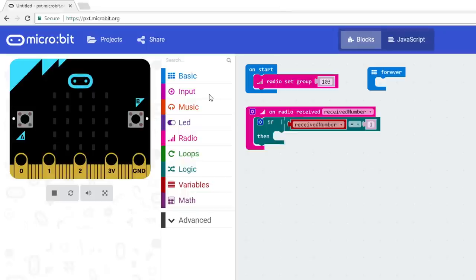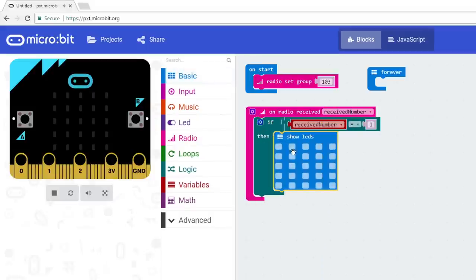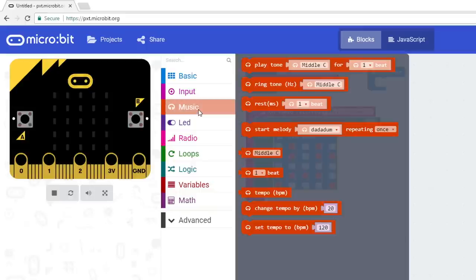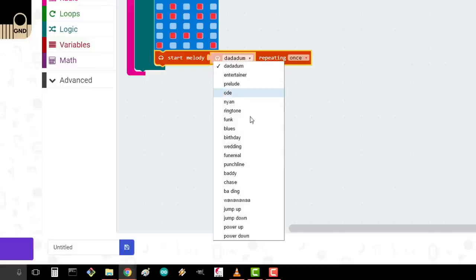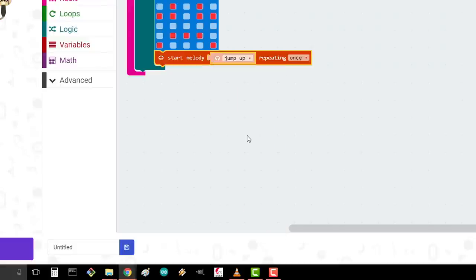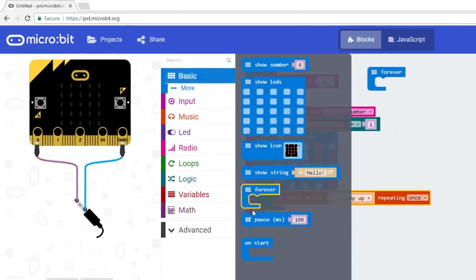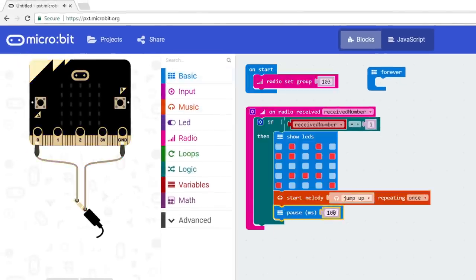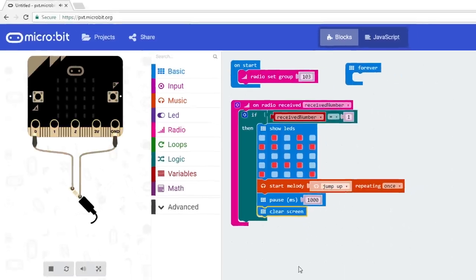Grab a Show LEDs block from Basic and snap it to the Then section. Draw some fun image here. I'll make an angry face because if I see it appear, it means someone is trying to steal my food. In Music, drag a Start Melody block under the Show LEDs block. Change the melody to something like Jump Up, which is just a short burst of a few notes. Add a Pause block from Basic under Start Melody. Change the pause time to 1000 milliseconds. Finally, go to Basic, click More, and drag a Clear Screen under Pause.